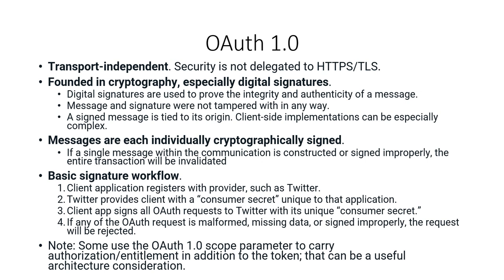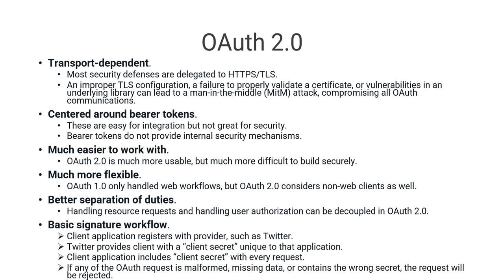Some people also use the scope parameter of OAuth 1.0, which is a useful architectural consideration. Now, OAuth 2.0 is transport dependent, unlike OAuth 1.0 which is transport independent. Most security defenses in OAuth 2.0 are delegated to protocols like HTTPS or TLS, and an improper TLS configuration will cause failure to properly validate a certificate.